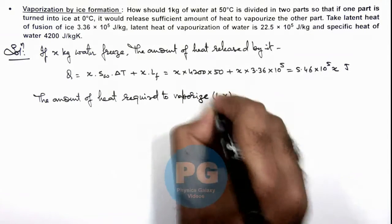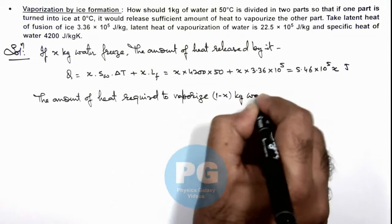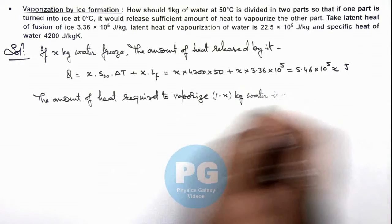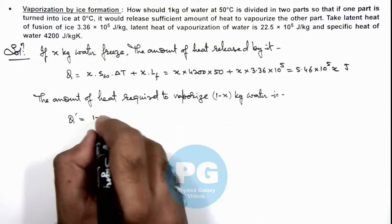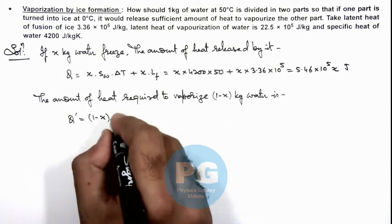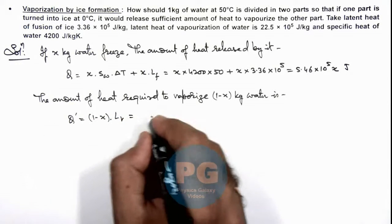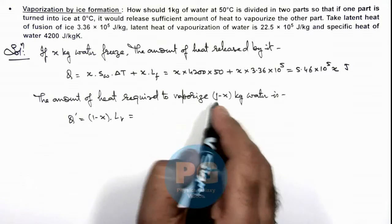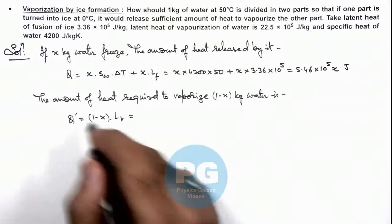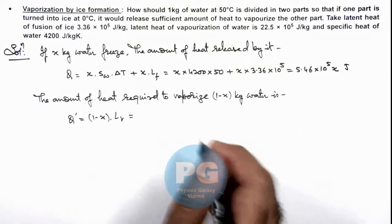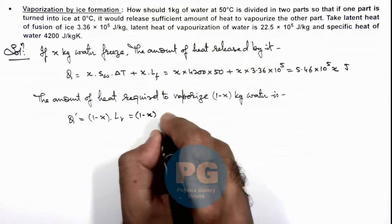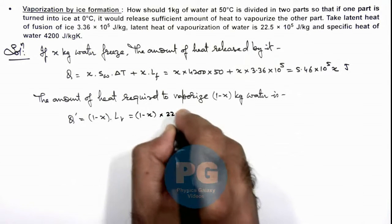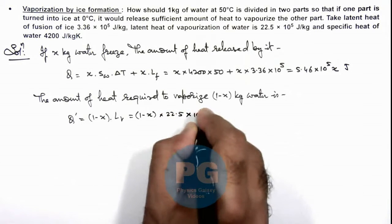This amount of heat Q dash can be simply written as (1-x) multiplied by latent heat of vaporization. We don't need to raise its temperature from 50 to 100 as vaporization takes place at all temperatures. So this can be written as (1-x) multiplied by 22.5 into 10 to power 5 joules.